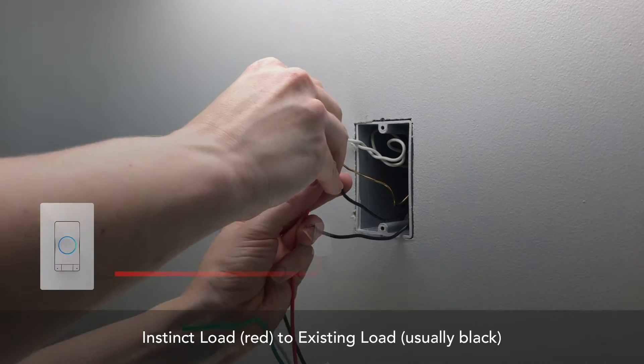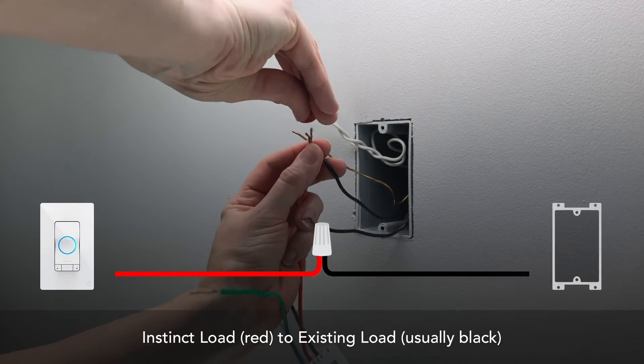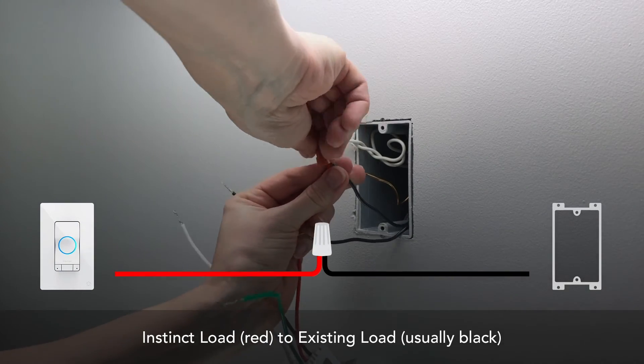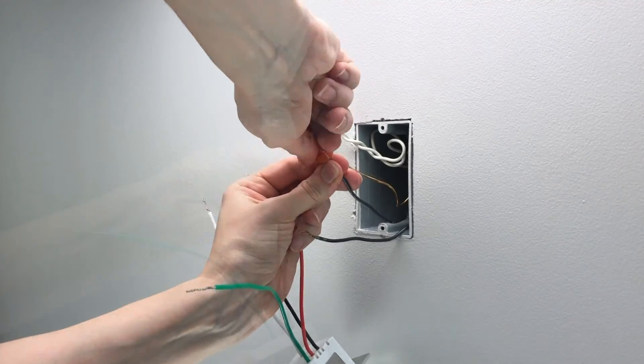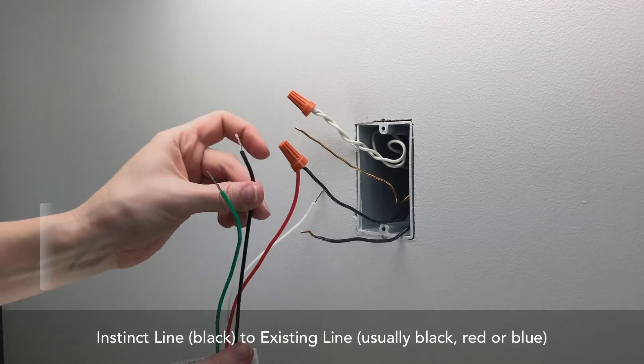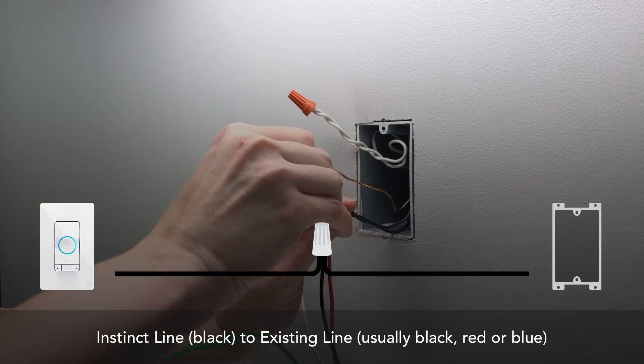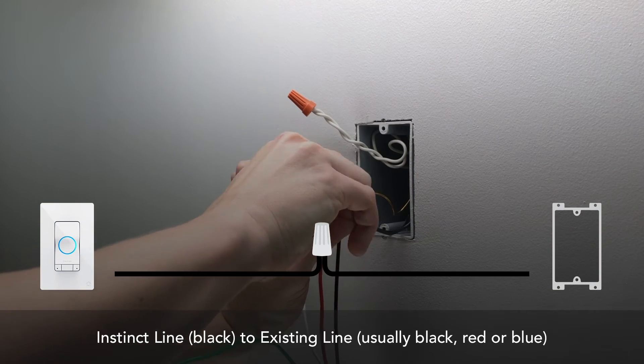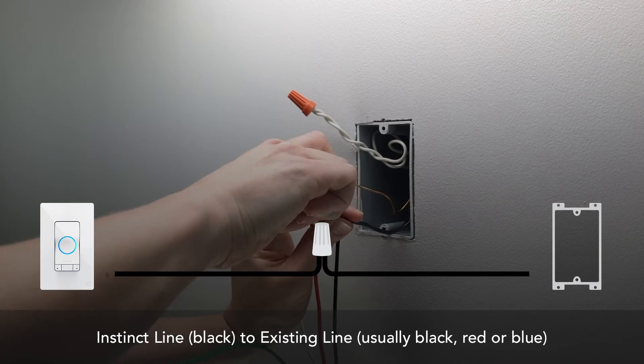Connect the red load wire on Instinct to the load wire you removed from the previous switch. Connect the black line wire on Instinct to the line wire you removed from the previous switch. This was the energized wire you noted previously.